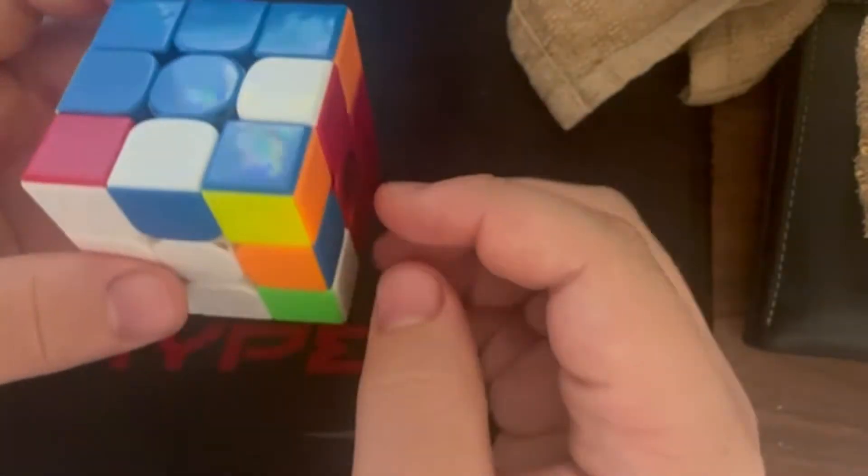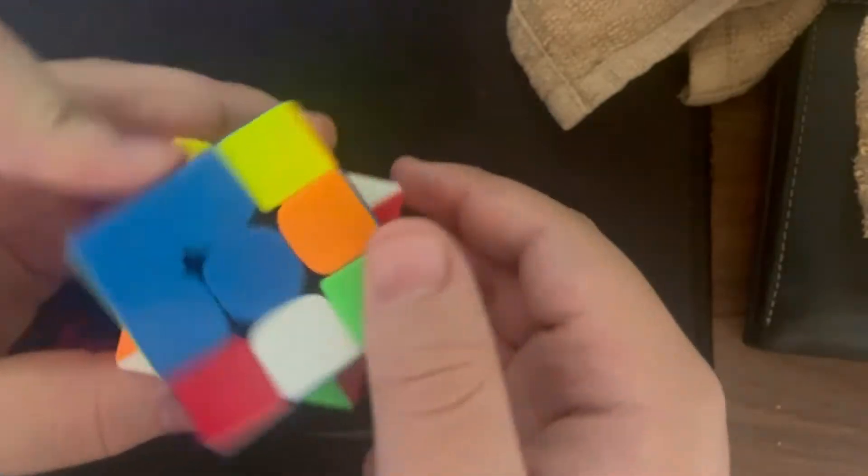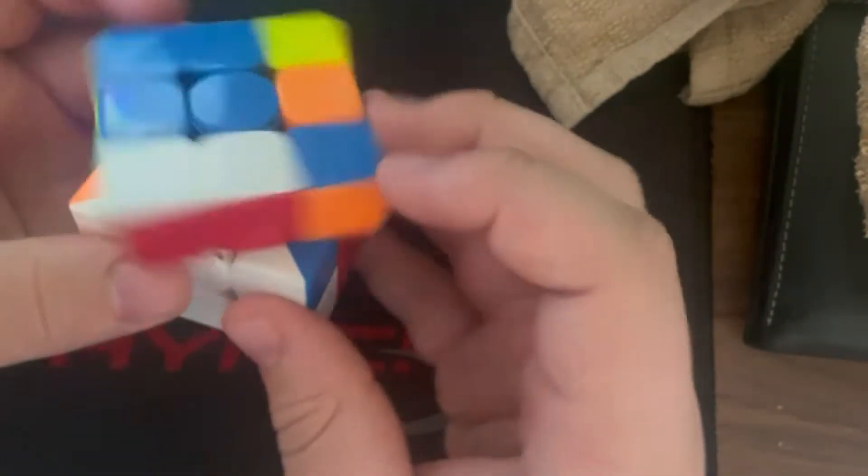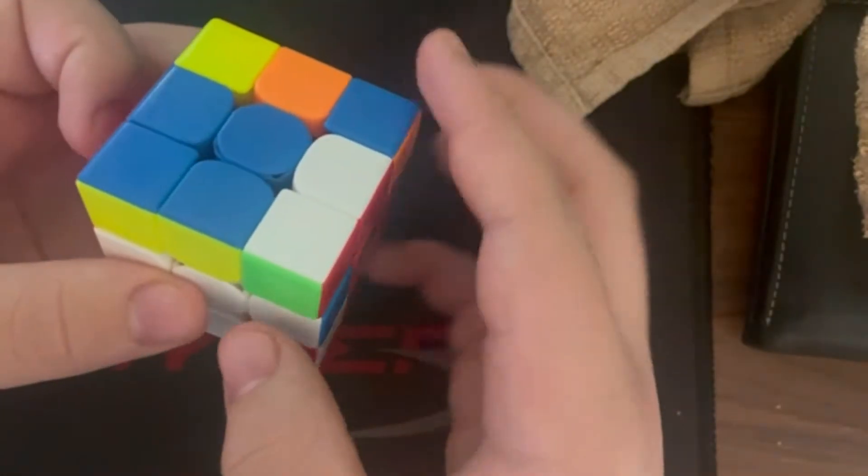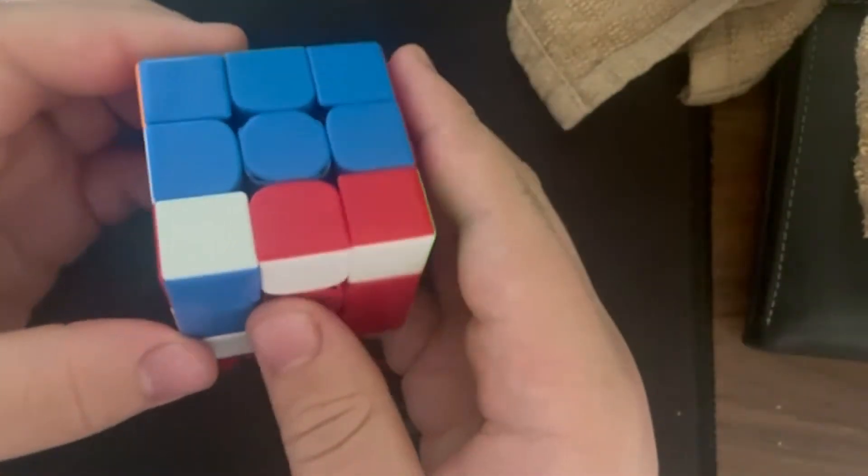And then I rotated again, and saw that this pair was set up, or not set up, like ready to be set up. And once I set up the pair, I saw that instead of inserting it like this, I could insert it and cancel OLL by doing that.